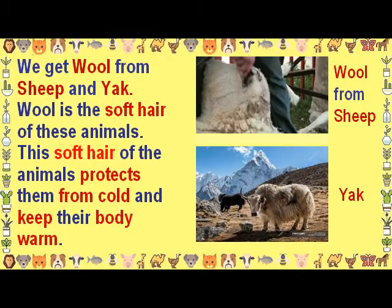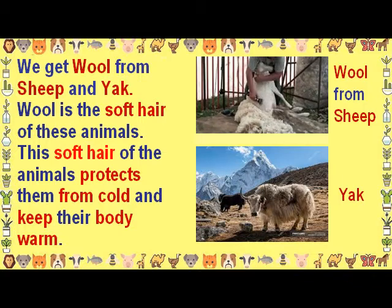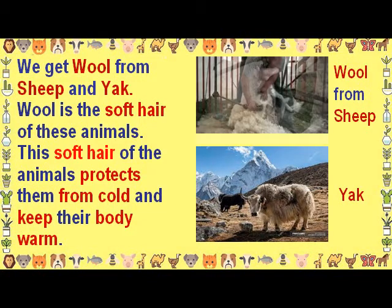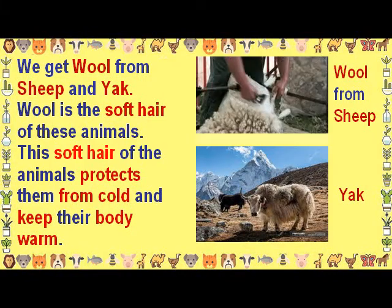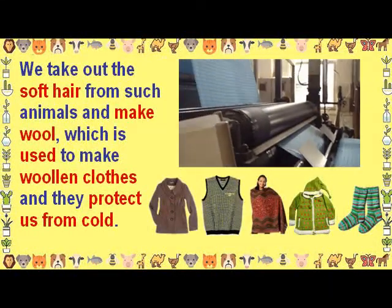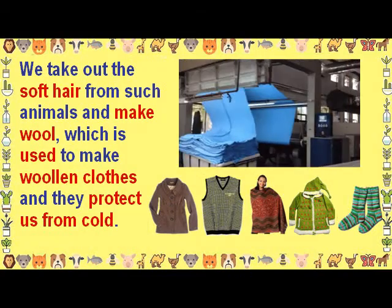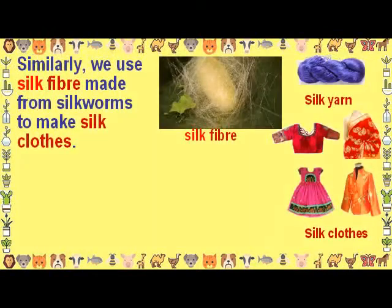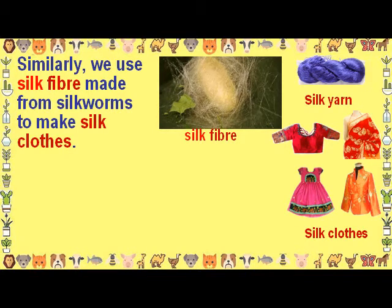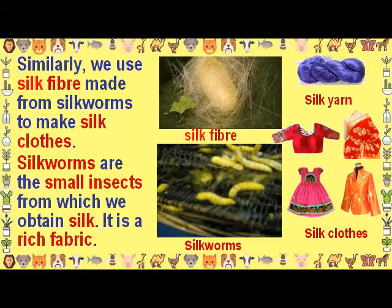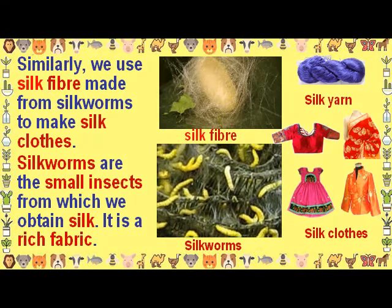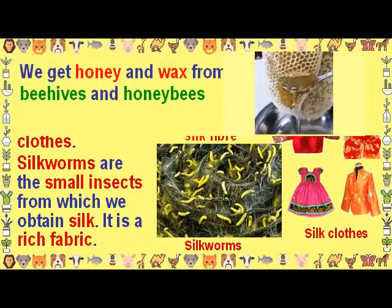We get wool from sheep and yak. Wool is the soft hair of these animals. This soft hair protects them from cold and keeps their body warm. We take out the soft hair from such animals and make wool, which is used to make woolen clothes that protect us from cold. Similarly, we use silk fiber made from silkworms to make silk clothes. Silkworms are small insects from which we obtain silk; it is a rich fabric.